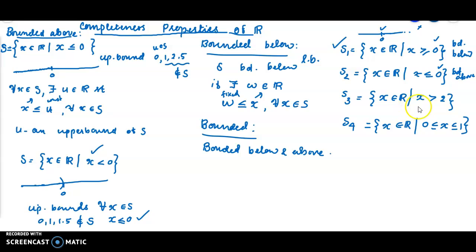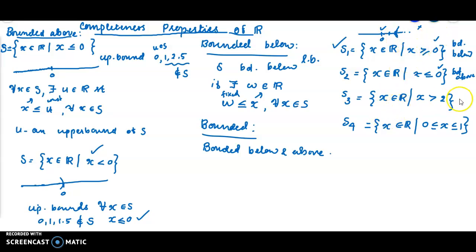For S3 equal to the set of all x element of ℝ such that x greater than 2: since 2 less than x for all x in S3, the numbers 2, 1, 0, minus 1, etc. are all lower bounds, so S3 is bounded below, but no lower bound is a member of the set. For S4, defined with 0 less than or equal to x less than or equal to 1, it is bounded below by 0 and above by 1, and 0 is a member of the set.